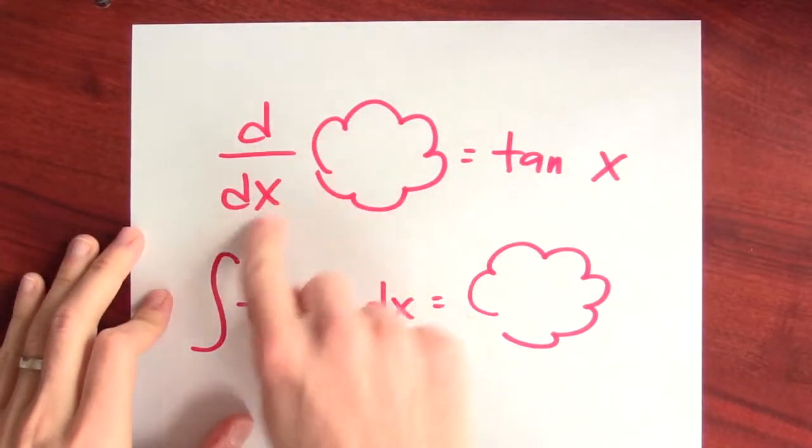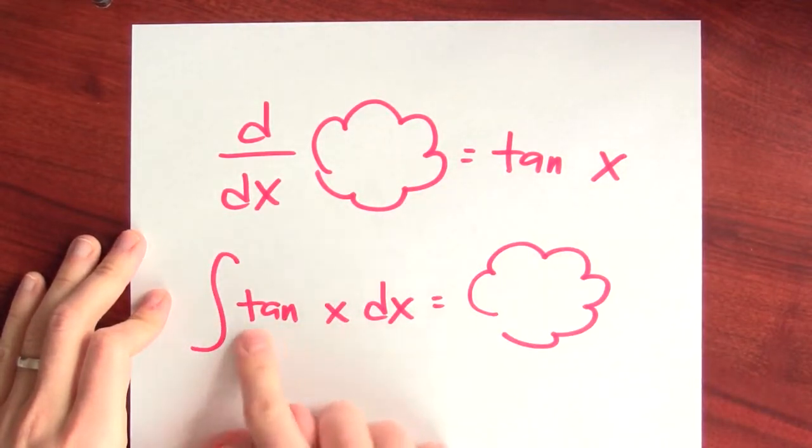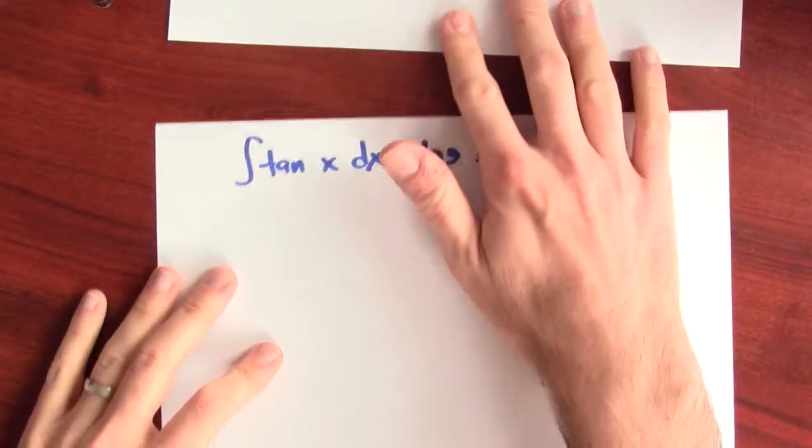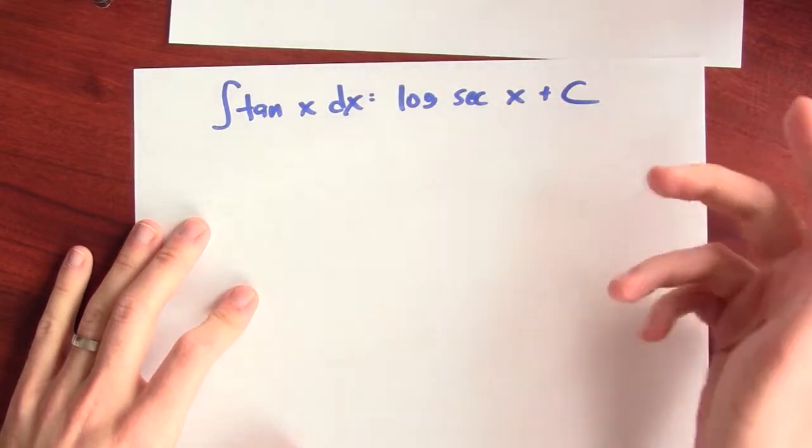What about tangent? What would I differentiate to get tangent of x? I'm asking what's the anti-derivative of tangent? I'm claiming that the anti-derivative of tangent is log secant x plus some constant.